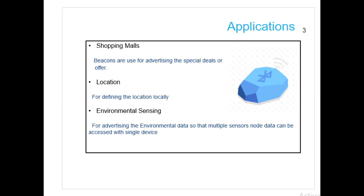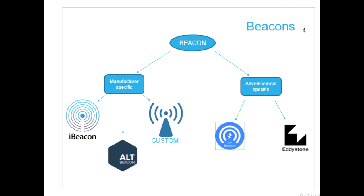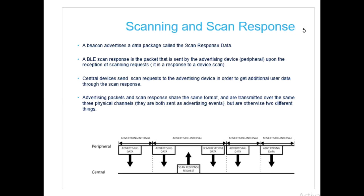Beacons are used in shopping malls for location, admin, and environmental sensing. There are two types of advertisement: manufacturing-specific and advertisement-specific. On the right-hand side we have advertisement-specific, and on the left-hand side we have manufacturing-specific. iBeacon, AltBeacon, and your own custom beacon come under manufacturing-specific.